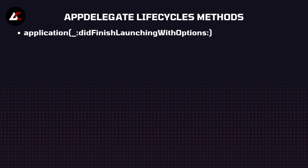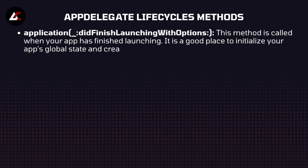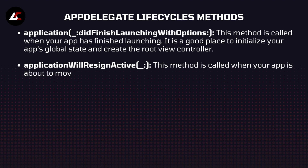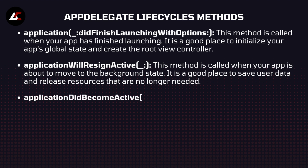AppDelegate lifecycle methods: application did finish launching with options. This method is called when your app has finished launching. It is a good place to initialize your app's global state and create a root view controller. Application will resign active — this method is called when your app is about to move to the background state. It is a good place to save user data and release resources that are no longer needed.